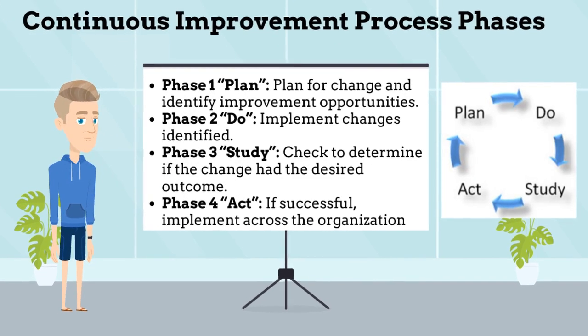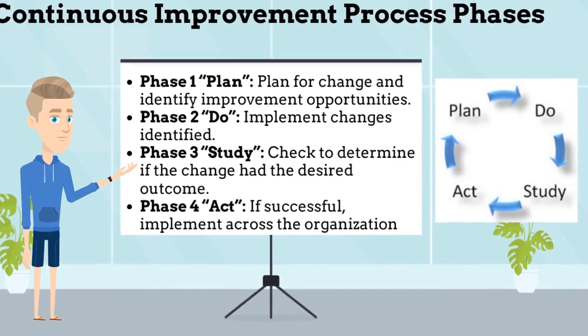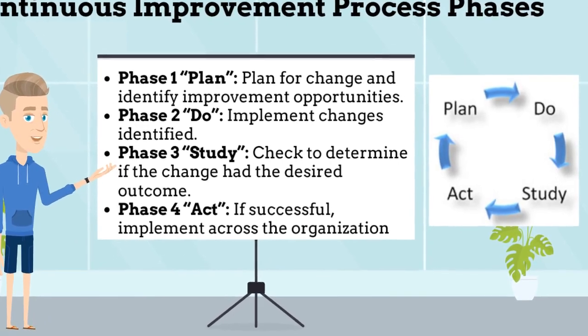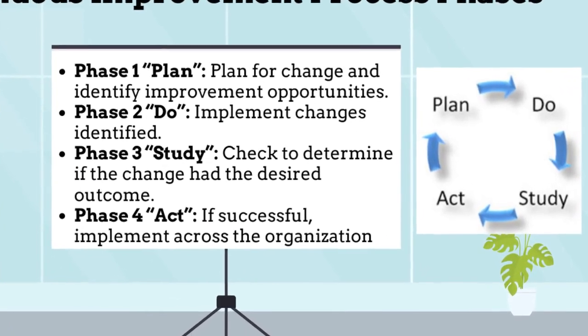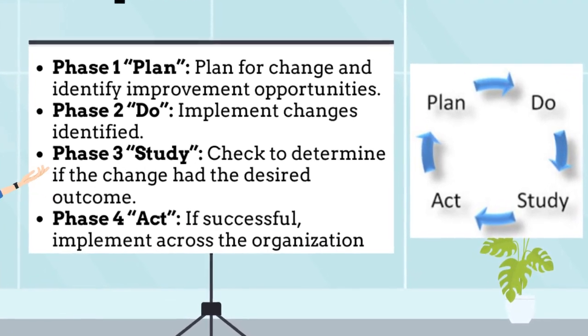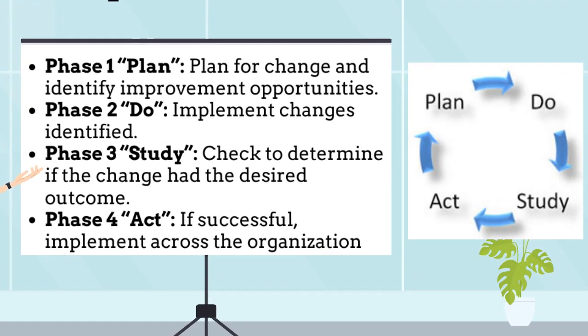There are four phases associated with the continuous improvement process. These phases are associated with the Shewhart cycle, which is the figure on the right.